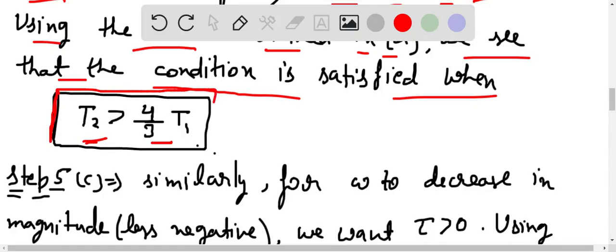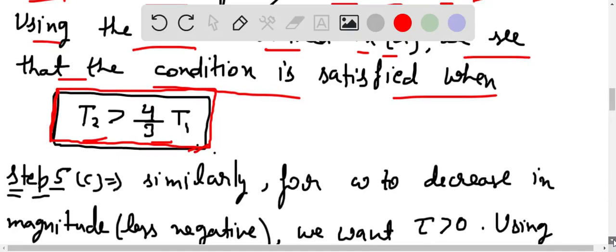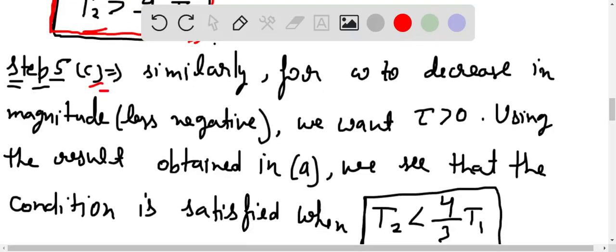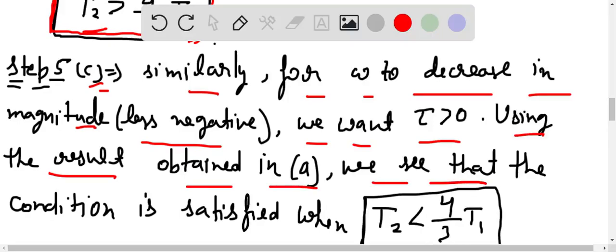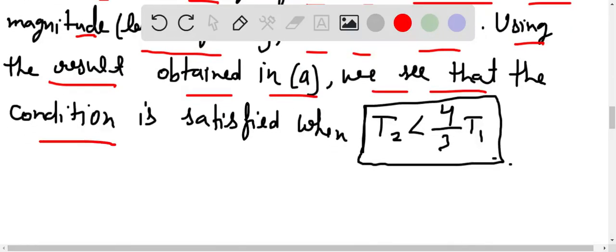Now for part C, similarly for ω to decrease in magnitude (less negative), we want τ > 0. Using the result obtained in part A, we see that the condition is satisfied when T2 < 4/3 T1.